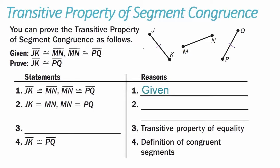Because we know that line segment JK is congruent to line segment MN, and line segment MN is congruent to line segment PQ, then we can say that JK equals MN and MN equals PQ — that is the definition of congruent segments. The difference between step one and step two: step one talks about the line segments themselves, while step two talks about their measures, so the length JK equals the length MN, and the length MN equals the length PQ.